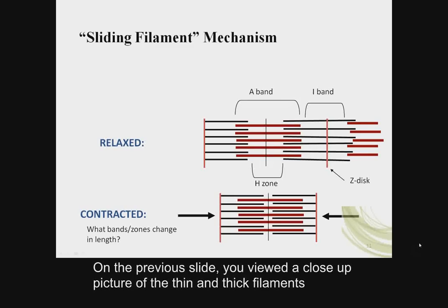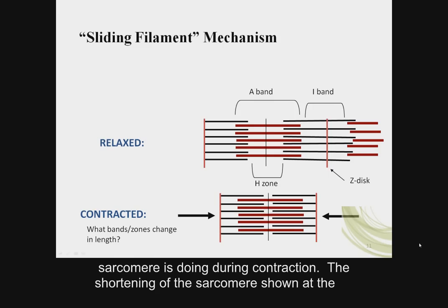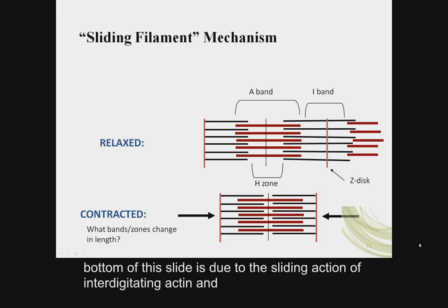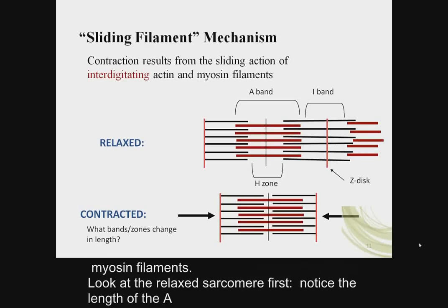The previous slide showed a close-up of thin and thick filament interactions during contraction. This slide shows what the sarcomere is doing during contraction. The shortening of the sarcomere is due to the sliding action of interdigitating actin and myosin filaments.